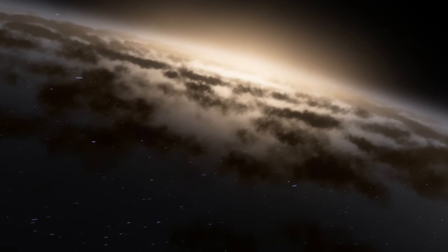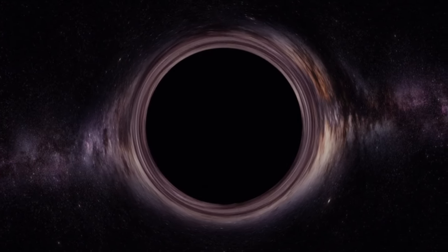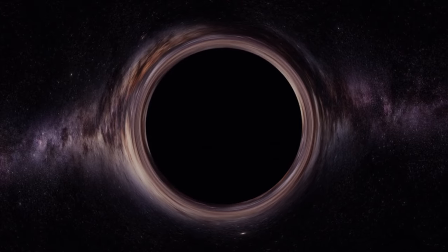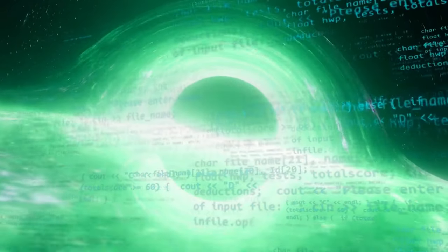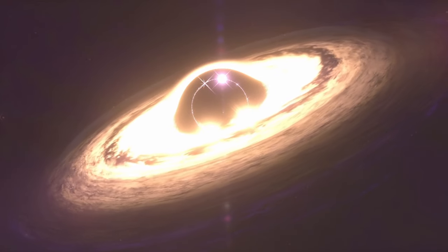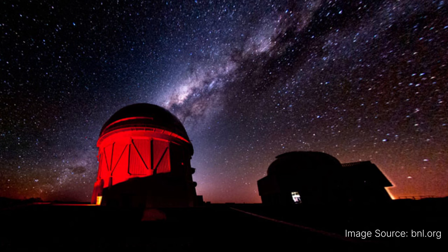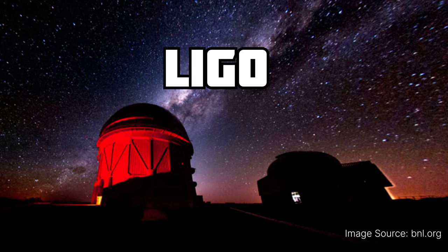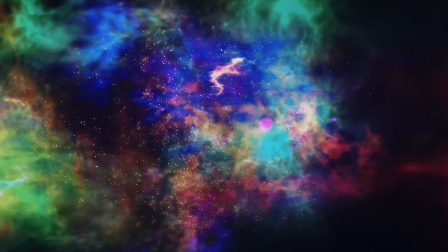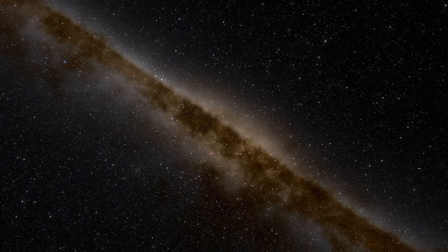One cool thing about General Relativity is that it predicts black holes, which are super weird regions in space where gravity is super strong. Nothing, not even light, can escape from them. We've also seen evidence for things like gravitational lensing, where light gets bent by gravity, and gravitational waves, which are ripples in space caused by big events like colliding black holes. These were observed directly by fancy machines like LIGO. General Relativity also helps us understand how the universe is expanding.